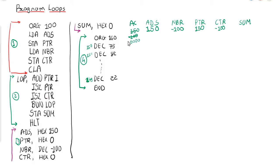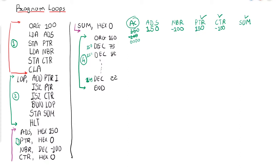The pointer variable is used to point into the array of 100 operands, and the counter is used to count how many times the loop executes. In the loop, ADD PTR I uses indirect addressing: it goes to memory location 150 (the value of PTR), fetches the operand value — say 75 — and adds it to the accumulator.